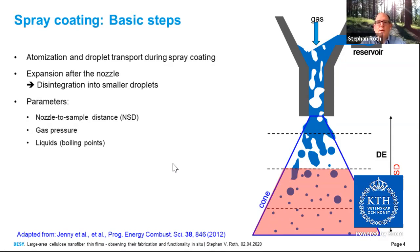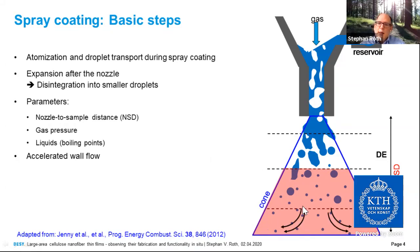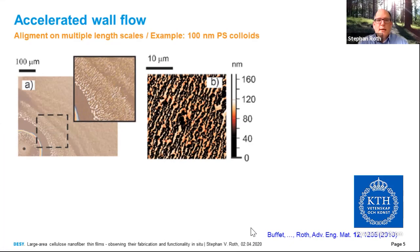Parameters to take care of when installing a nanostructure include the nozzle-to-sample distance, which determines which regime you are working in, the gas pressure, and the liquid properties such as boiling points. Furthermore, depending on the distance, you can install a more or less pronounced accelerated wall flow. Part of the material, due to gas pressure, is pushed to the outside, and with ongoing evaporation you can install nanostructures. We used this accelerated wall flow to install nanostructures or multiple-length-scale structures with 100-nanometer polystyrene colloids.